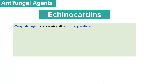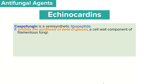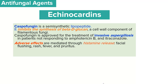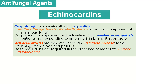Echinocandins are semi-synthetic lipopeptide antifungal agents. An example is caspofungin, which works by inhibiting the synthesis of beta-D-glucan, a cellular component of filamentous fungi. It is approved for the treatment of invasive aspergillosis in patients not responding to amphotericin B or itraconazole. Caspofungin use is associated with side effects mediated through histamine release, including facial flushing, rash, fever, and pruritus. Dose reductions are required in the presence of moderate hepatic insufficiency.